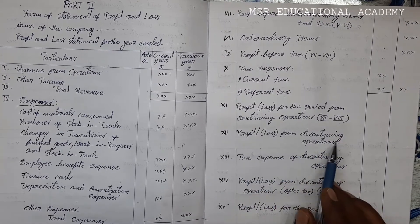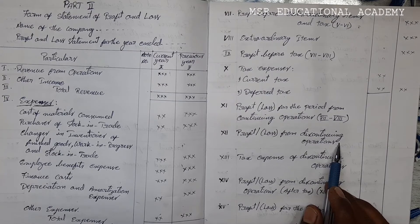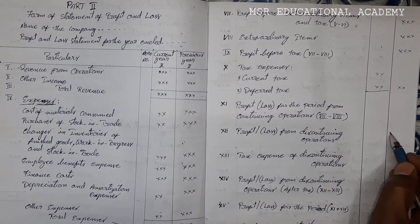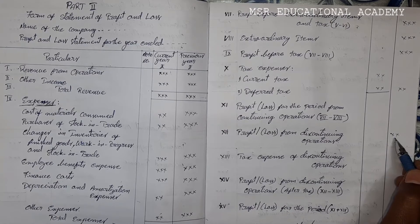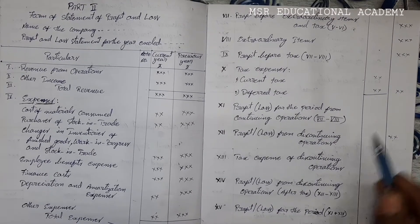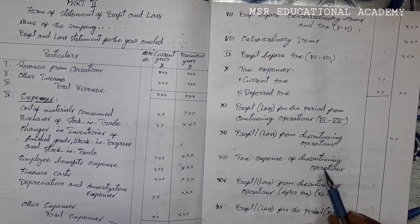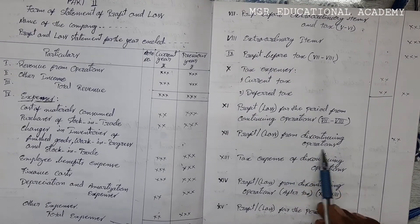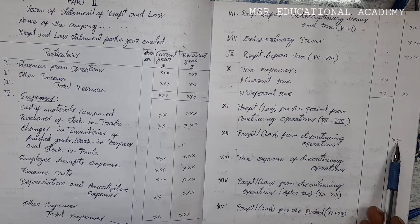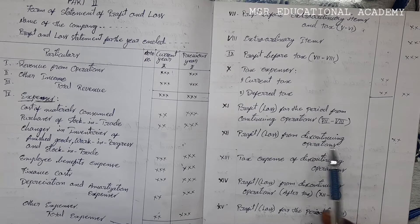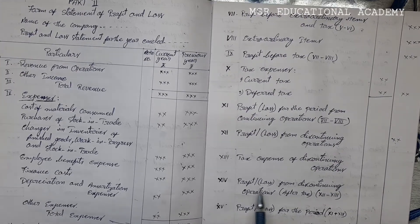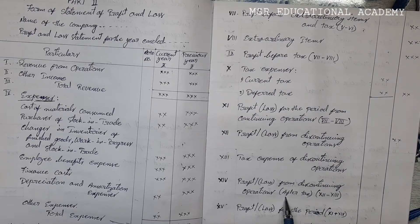After that, profit or loss from discontinuing operations — discontinuing means other than this business, if there are any discontinuing business operations with profits or losses, you should add or minus accordingly. It may be a plus or minus value. Profit or loss from discontinuing operations and tax expenses should also be deducted from discontinuing operations — if it is a profit, deduct; if it is a loss, add those expenses to the loss from discontinuing operations. Then you get profit or loss from discontinuing operations after tax.